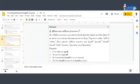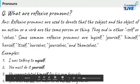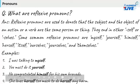Reflexive pronouns are used to denote that the subject and the object of an action or verb are the same person or thing. They end in '-self' or '-selves.' Common reflexive pronouns are: myself, yourself, himself, herself, itself, ourselves, yourselves, and themselves.